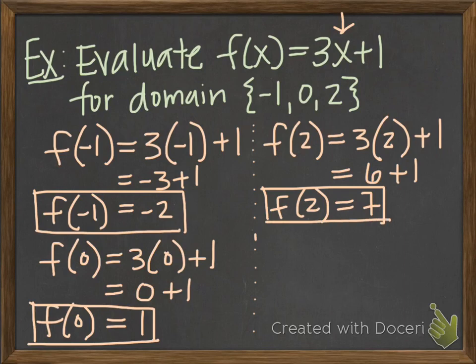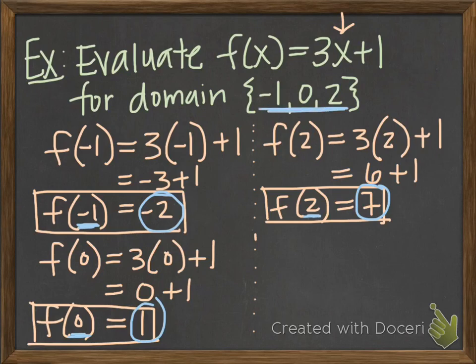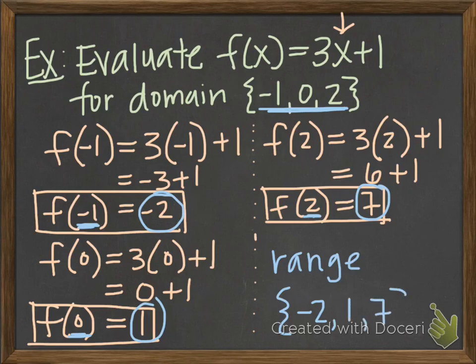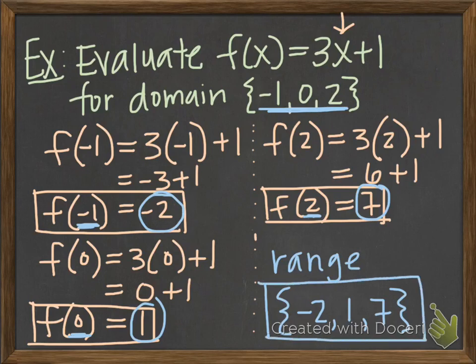Now what I've just found, I've just found my three outputs for those three inputs. I have found these as my outputs when I have input negative 1, 0, and 2. The negative 1, 0, and 2 was my domain. So what I've just found is I've actually found my range. And so remember how to represent that. We're just going to put the values. So I've got negative 2 as an output, I've got 1 as an output, and I've got 7 as an output. So this is my answer. These are my outputs when these were my inputs.